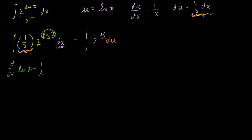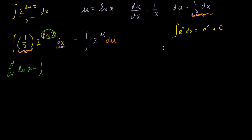Whenever I see the variable that I'm integrating against in the exponent, we don't have any easy exponent rules here. The only thing I'm familiar with where I have my variable in the exponent is the case of e to the x. We know that the integral of e to the x dx is equal to e to the x plus c. So if I could somehow turn this into some variation of e to the u, maybe I can make this integral more tractable. How can we redefine 2 to the u? Well, 2 is equal to e to the natural log of 2.